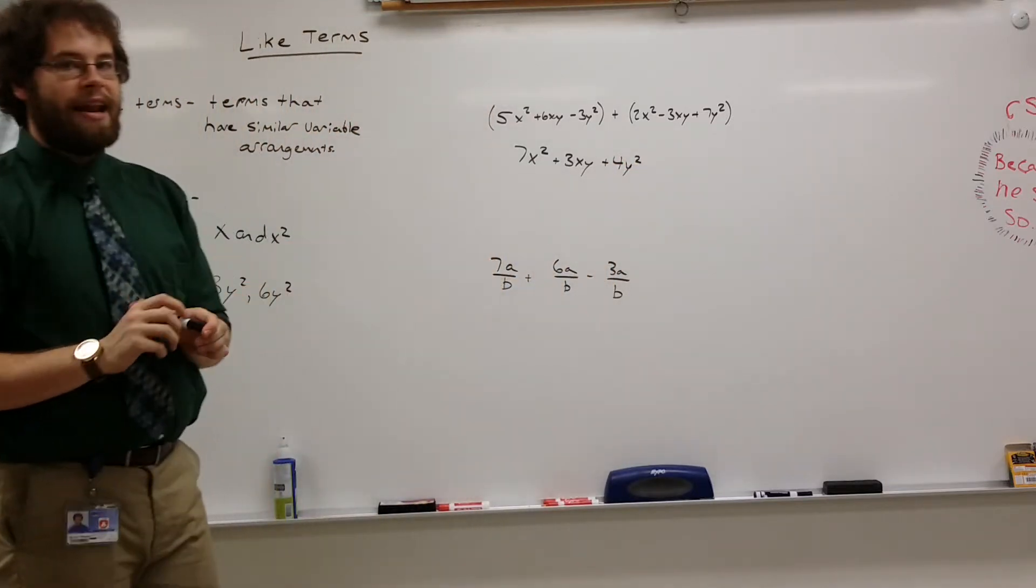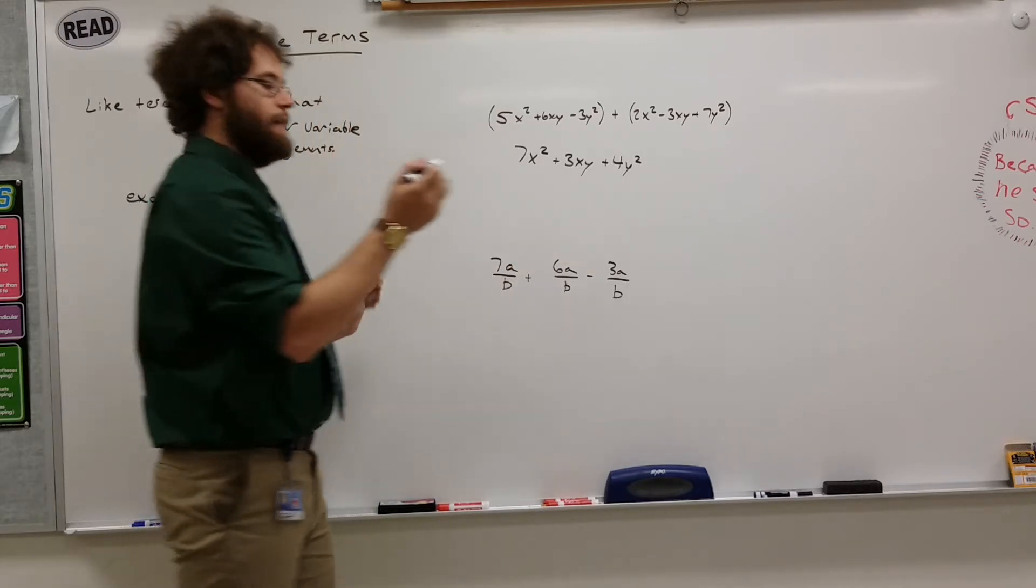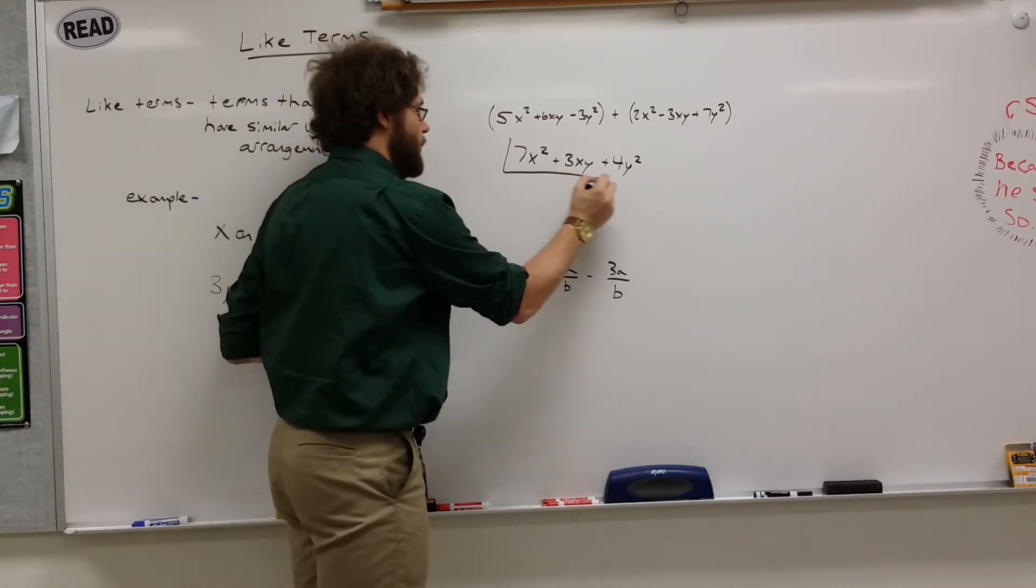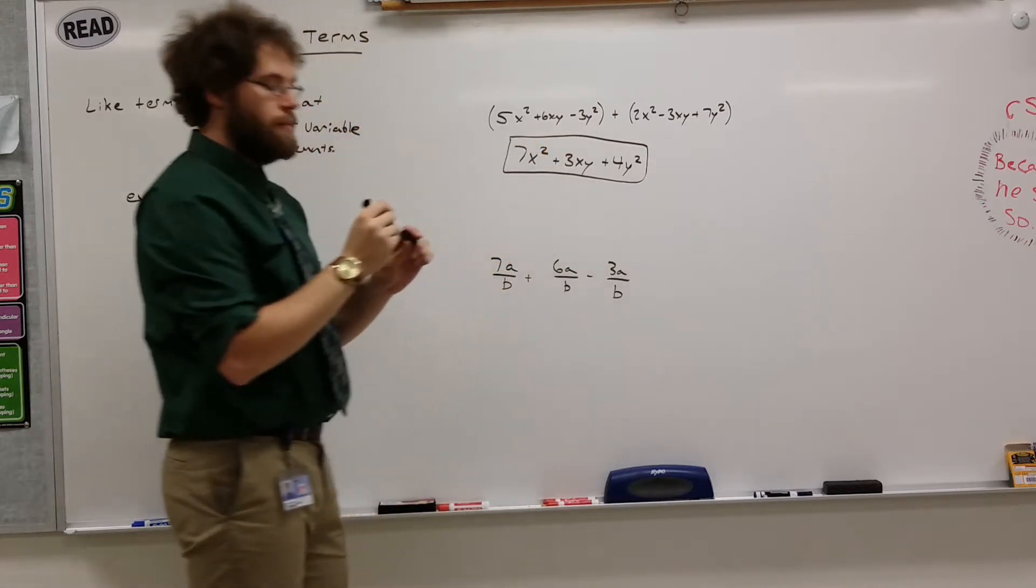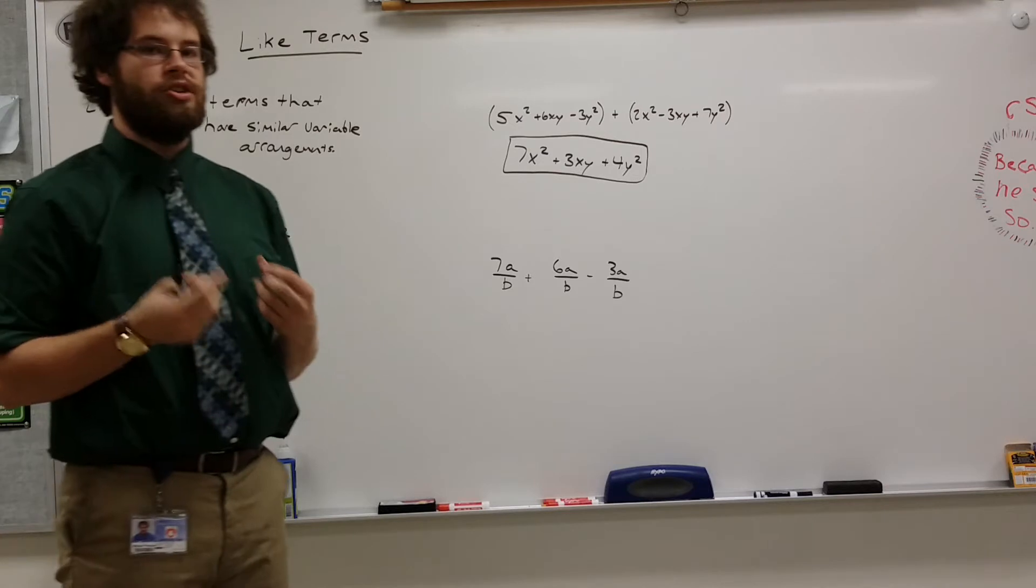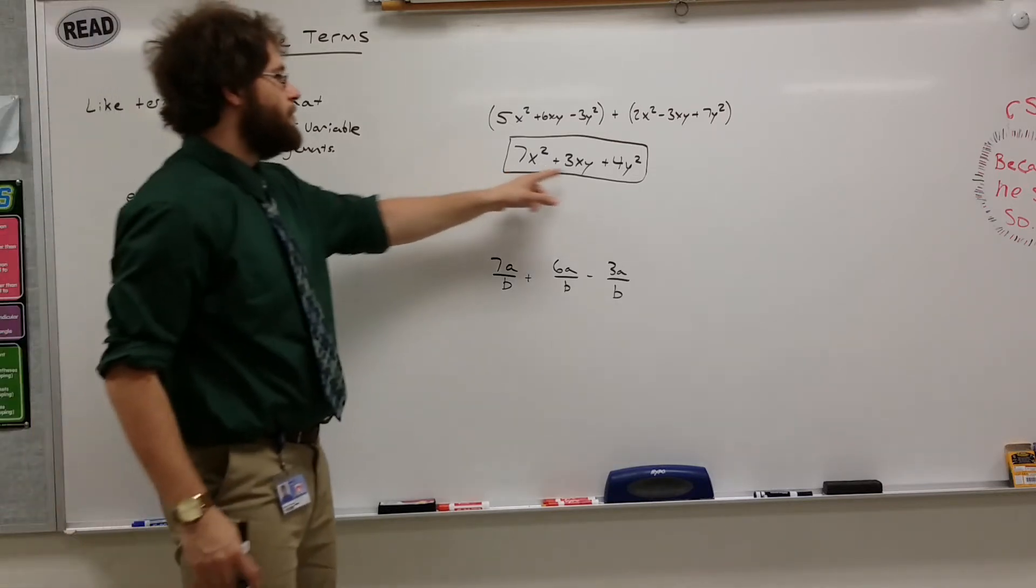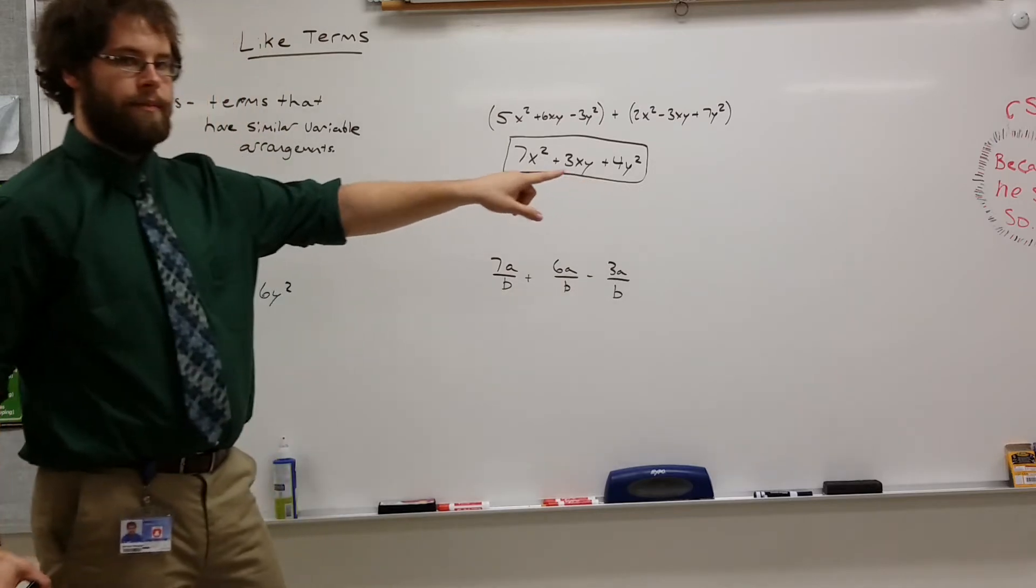These things cannot be added any further. As you can see, they're not like terms. So this is our answer. They have to be kept separated from each other. And that's mostly due to the mystery of what the variables are. Variables are numbers that we just don't know yet. They're not solved for. So we have to keep them separated until we can figure out what they are.